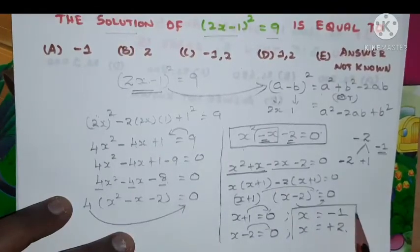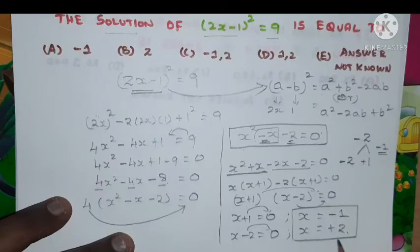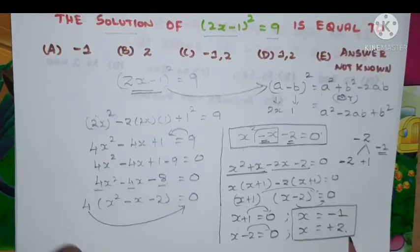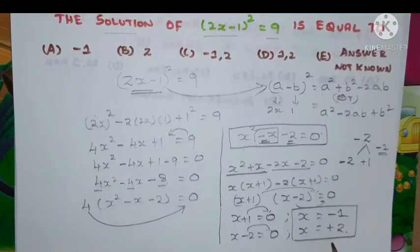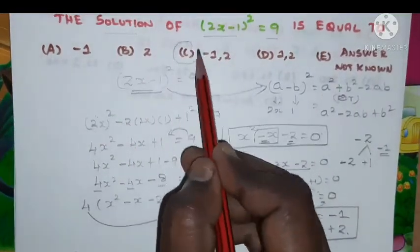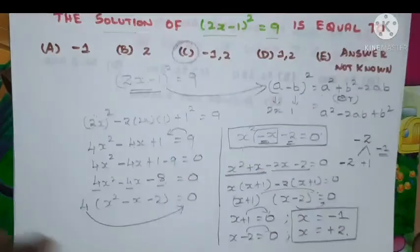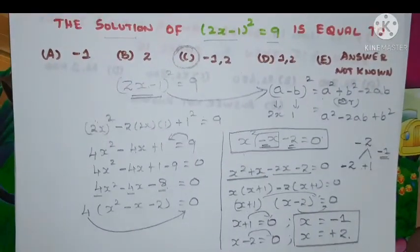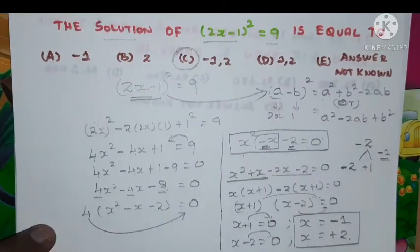So we found the value now, x is minus 1 and x is plus 2. So now look at the options. We found the answer is minus 1 and plus 2. Look at the option which one is matching. Yes, option C is matching with the answer. Hence answer for this particular question is option C minus 1 comma 2.